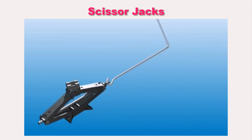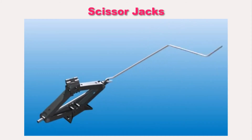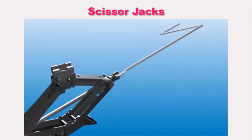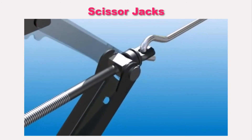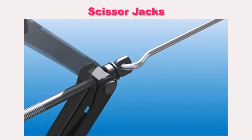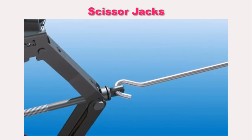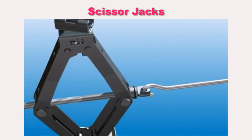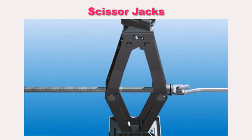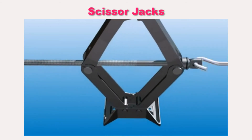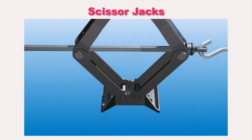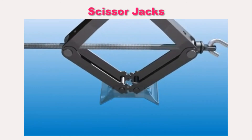Scissor jacks. This is an old-fashioned scissor jack, which is the cheapest and smallest option available. It comes with a handle to wind the arms apart, which then lifts the car up. Position it under the jacking point and wind it clockwise until the car is lifted off the ground. To lower it back down, simply wind the handle the other way.